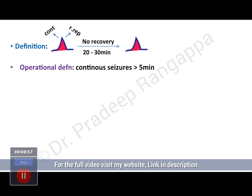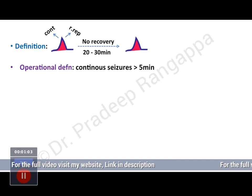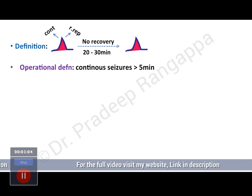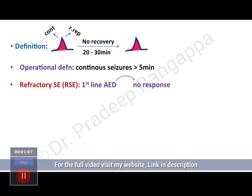There was an operational definition that came about because the prior definition was seen to have limitations. This operational definition states that anyone who has continuous seizures for more than 5 minutes can be labeled as status epilepticus.